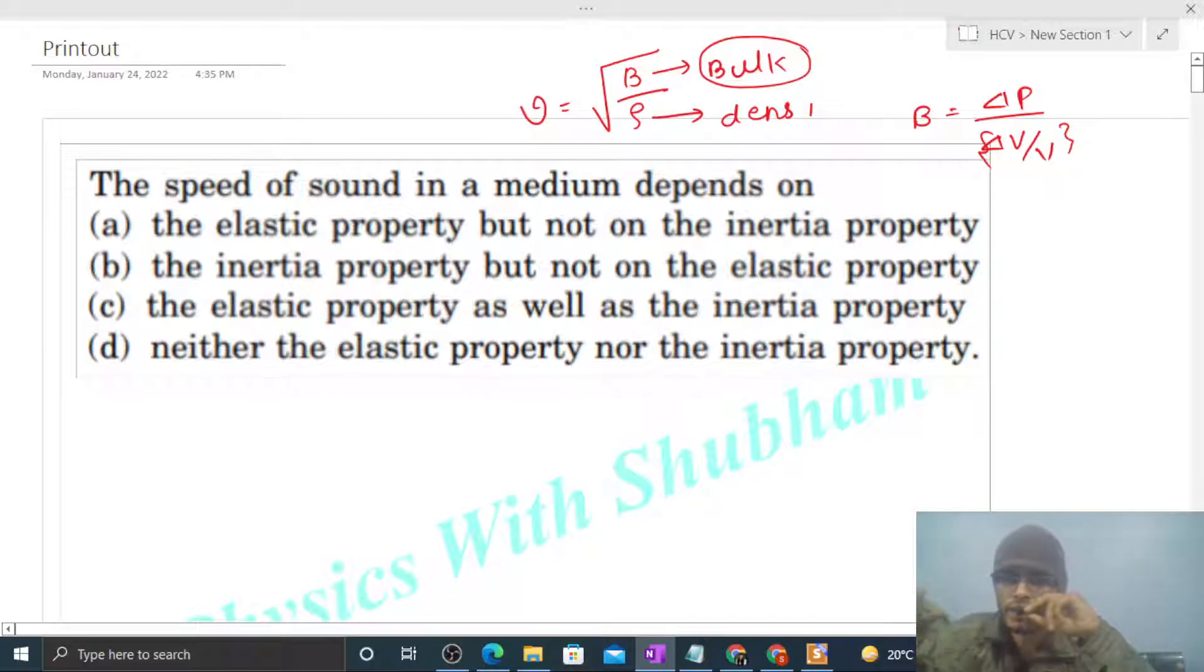Length increase or decrease, that is because of the elasticity of the material. So we can say that B represents elasticity of the material. Speed depends upon the elasticity of the material or of the medium.